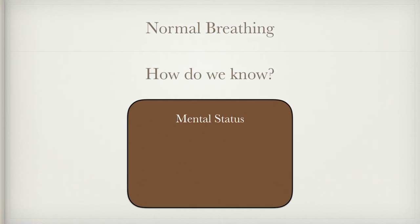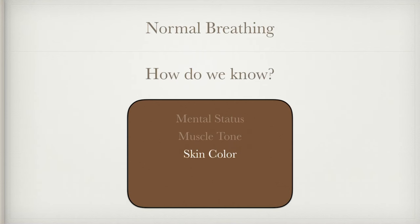Mental status is a real good indicator of whether they're breathing normally or not. Muscle tone — how active and moving they are — is also relevant. Typically as we become more and more hypoxic and have a greater breathing problem, we'll start to become almost limp, leaning over, and tired. You're getting to that point where we're crossing from just respiratory distress to respiratory failure. We'll discuss those terms a little bit later.